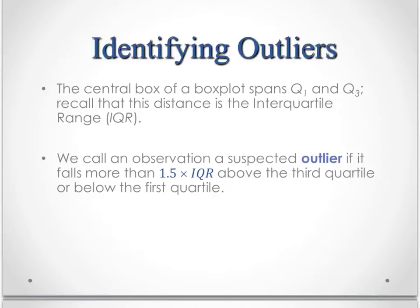Now the center box of the box plot is spanning that interquartile range. And we're going to call an observation a suspected outlier if it's more than 1.5 times that range above the third quartile or below the first quartile.